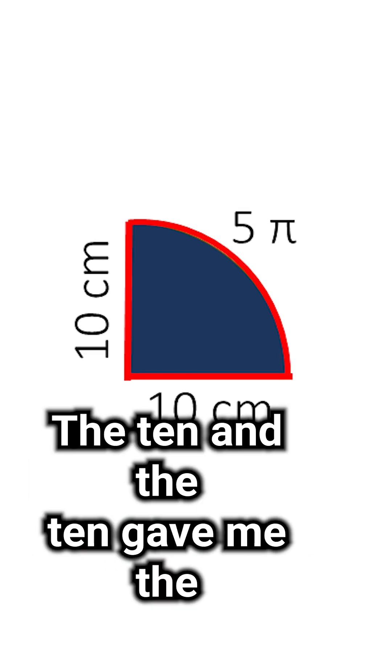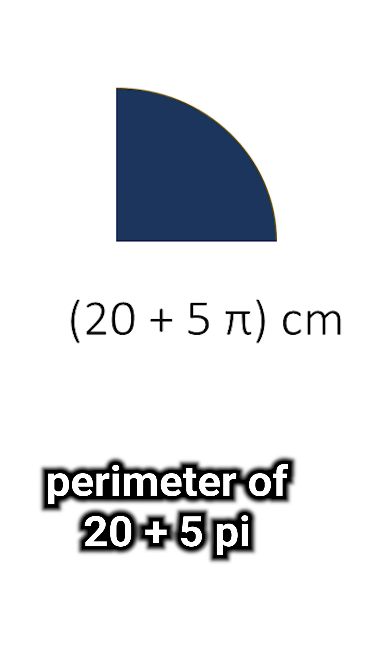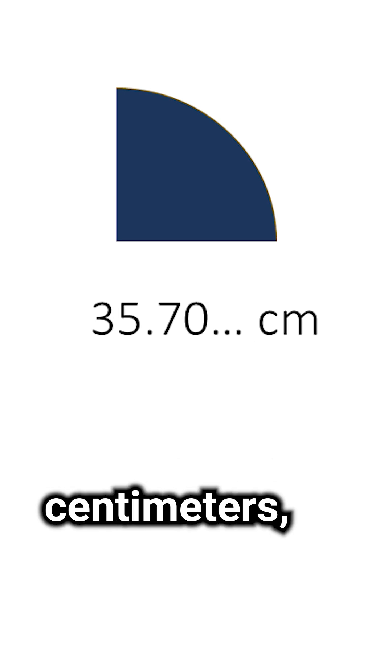Collecting the 5 pi, the 10 and the 10, gave me the perimeter of 20 plus 5 pi, or about 36 centimeters.